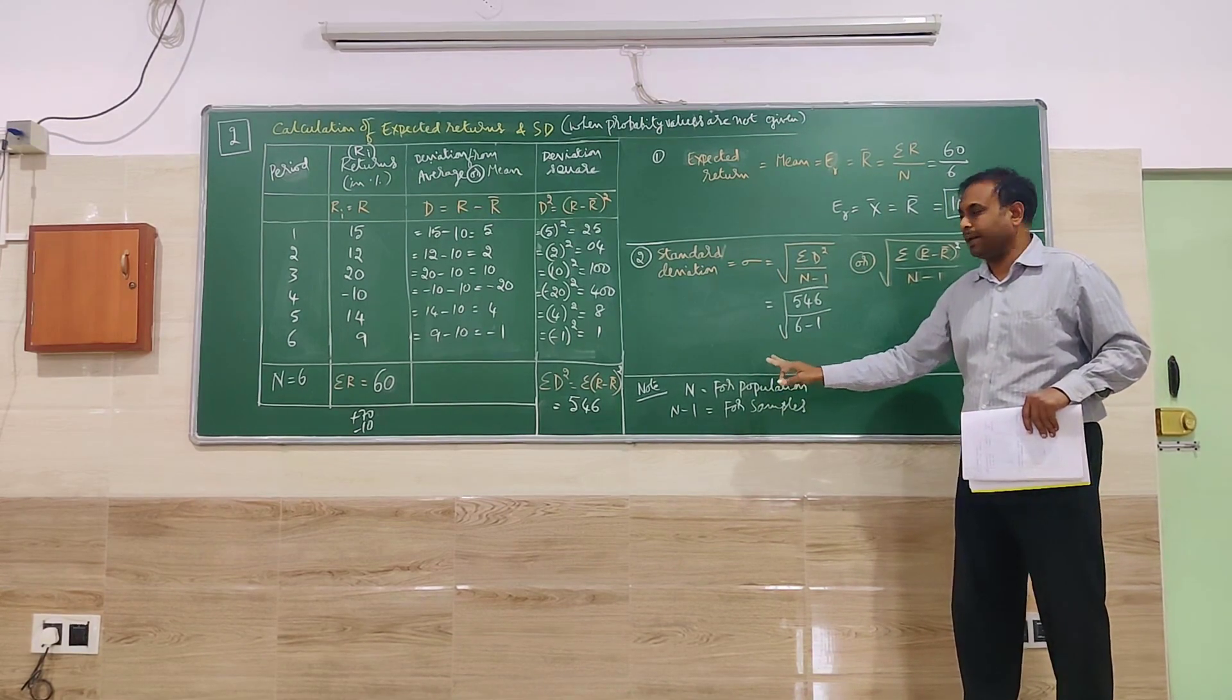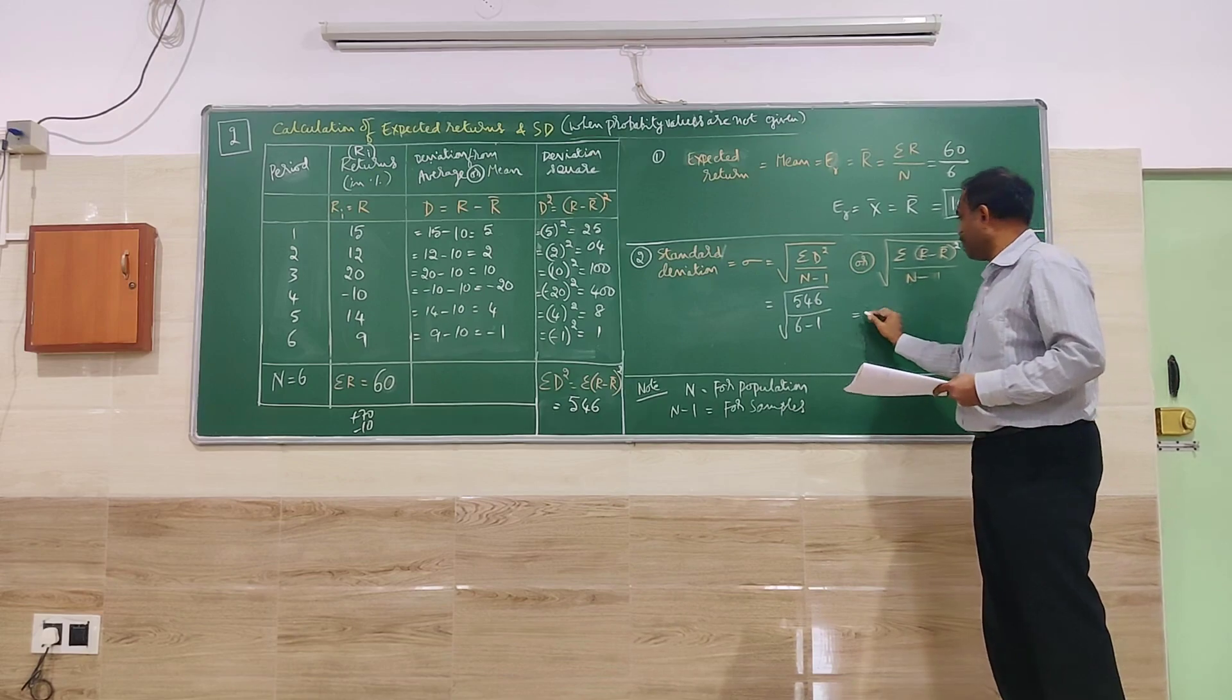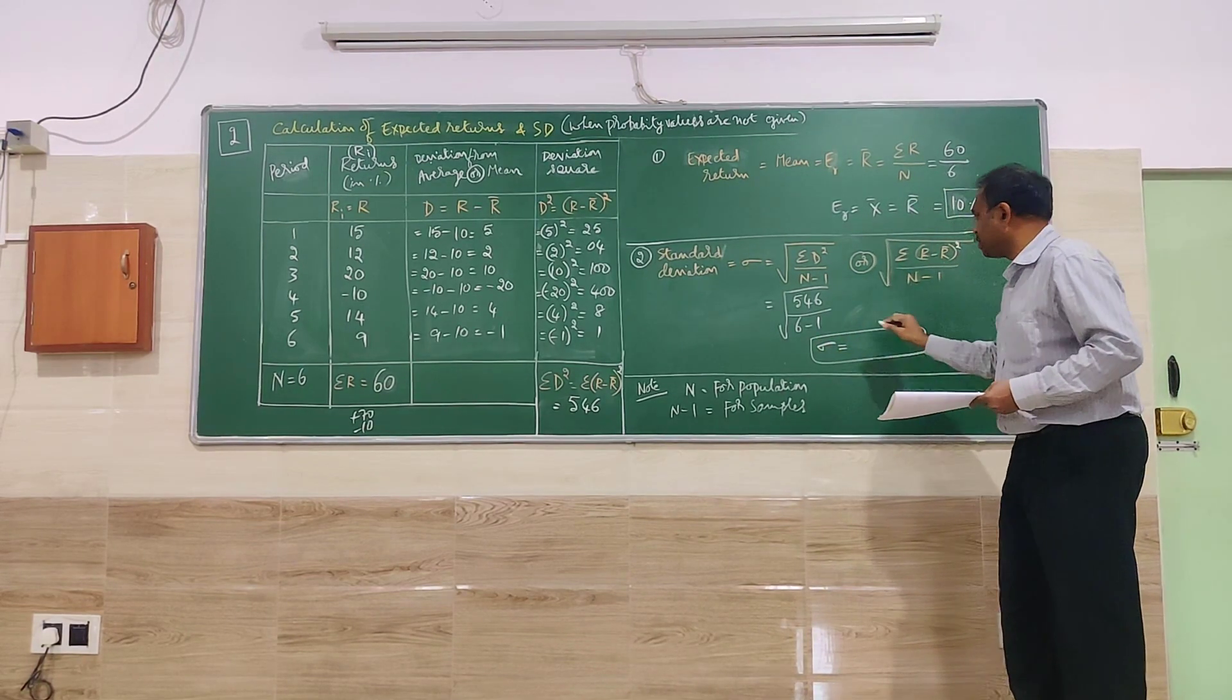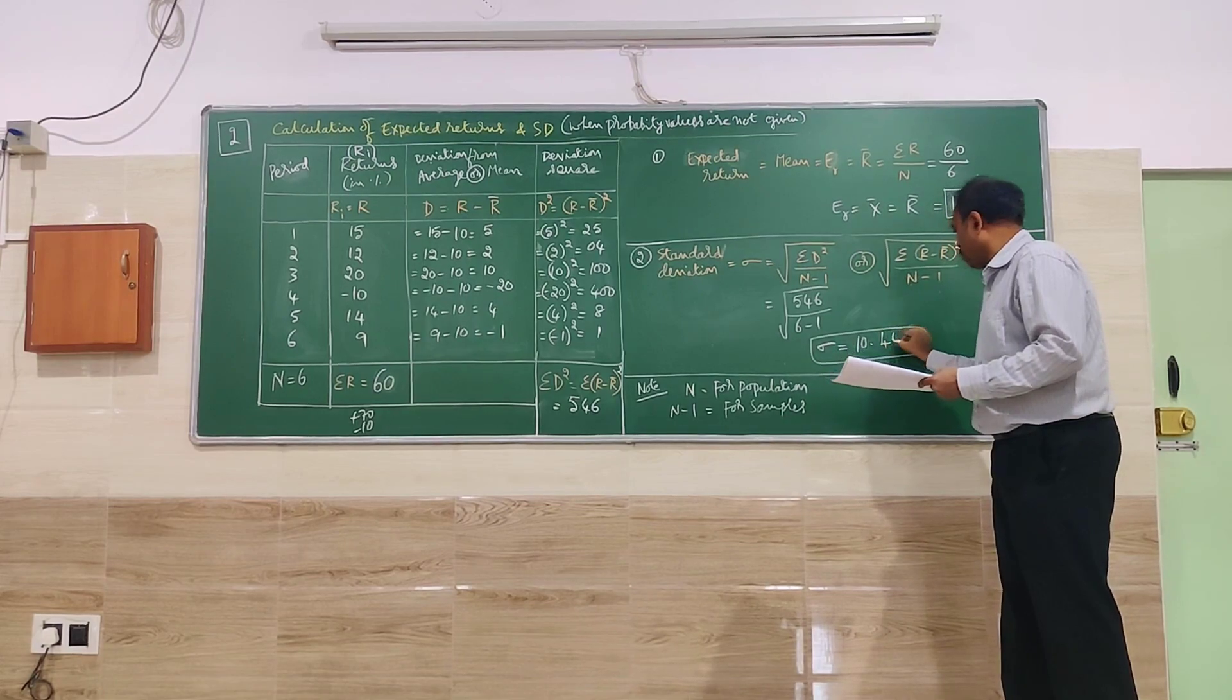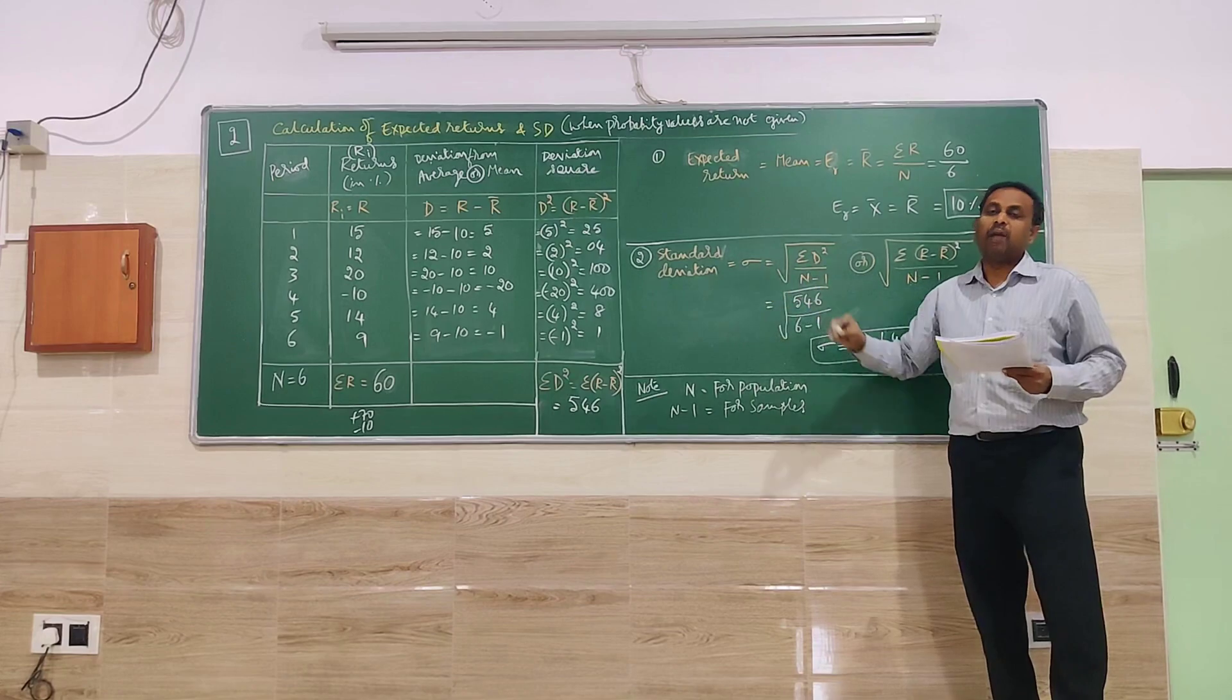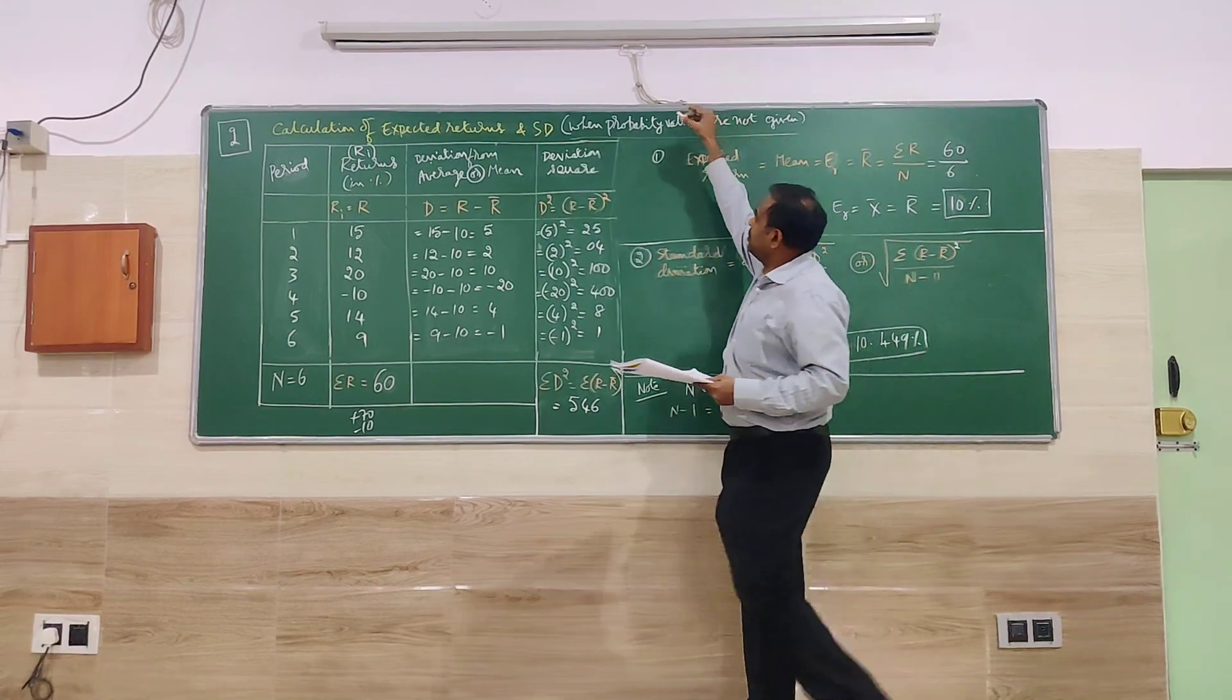N minus 1 for samples, N for population. If you are not able to know in the exam, we can use N or N minus 1 from the problem. Any one is quite okay. So now you are going to simplify. When you simplify, you are going to get standard deviation 546 divided by 5 to the whole square. You are going to get 10.449 percent as standard deviation.